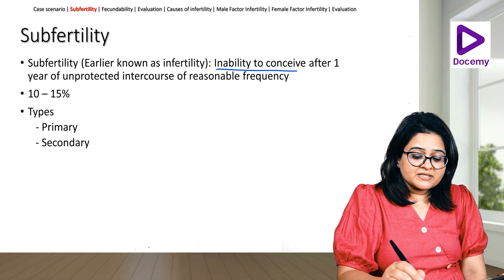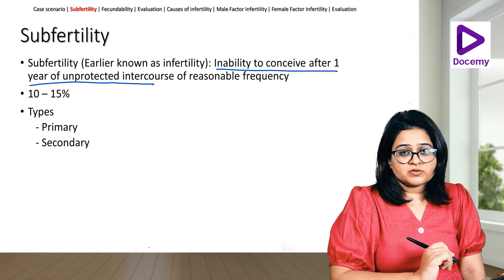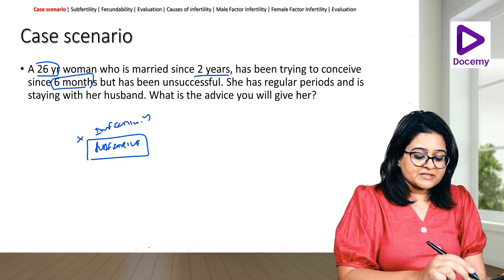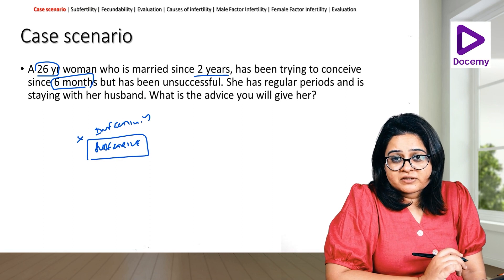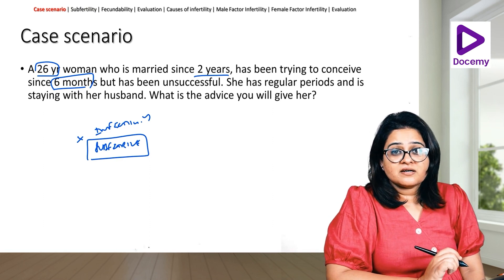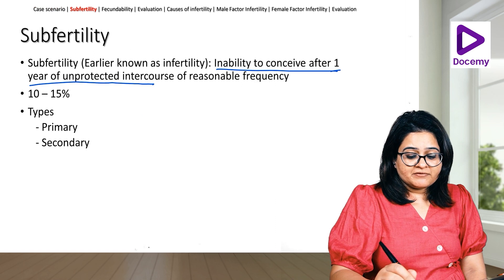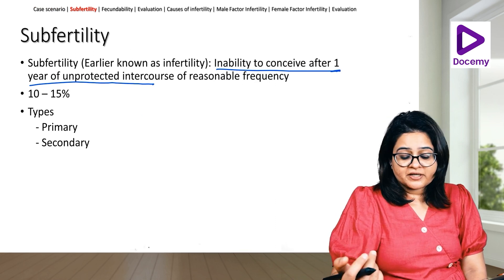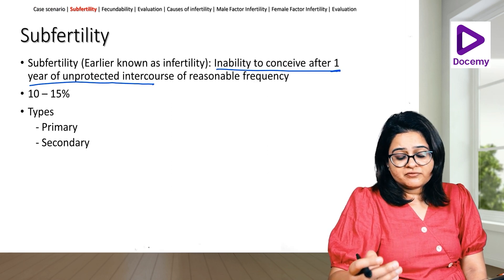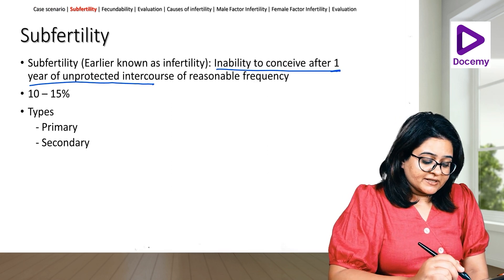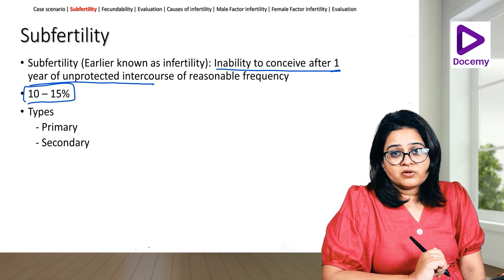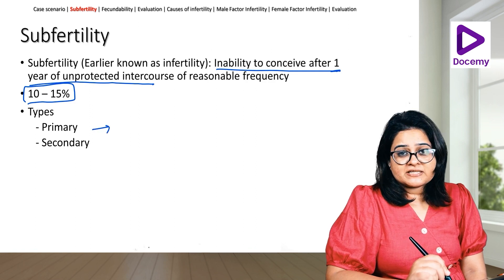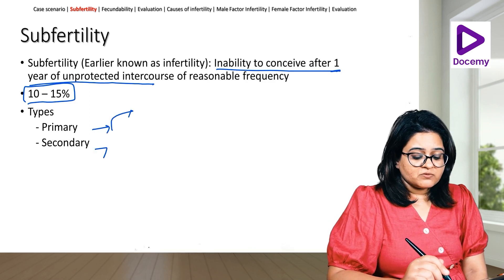What is sub-fertility? As I said, it was earlier known as infertility. It is the inability to conceive after one year of unprotected intercourse. In the case scenario, they've been trying for six months only and she's a young 26-year-old woman, so we can allow her to try for another six months. It affects 10 to 15 percent of all couples.